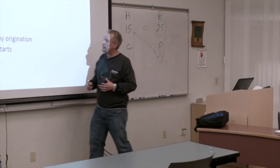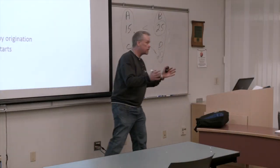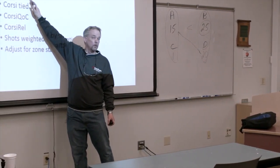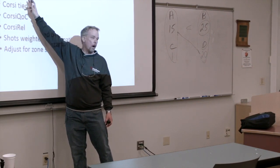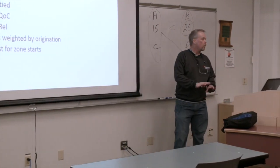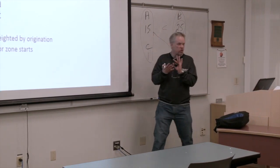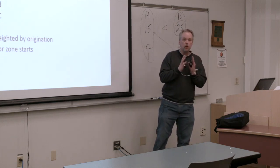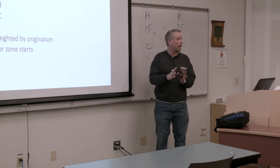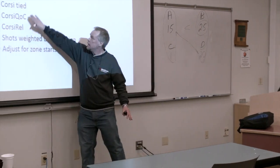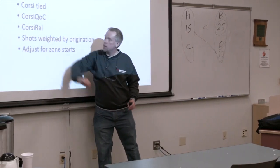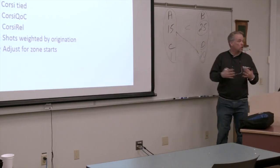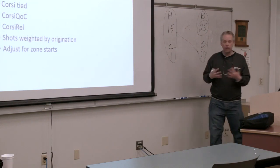So we've got Corsi close, Corsi tie, something called Corsi QOC, Corsi rel, shots weighted by origination, adjusted for zone starts. So we're kind of trying to take that Corsi and adjust it for a lot of its flaws. Corsi close, as you can kind of guess, is we look at that Corsi statistics for and against, but we only look at when the game is plus or minus a goal. Corsi tied, same idea as Corsi close, it's just that now the game's tied. Now what's your Corsi for, what's your Corsi against? Because the game is on the line. How do you perform when things are really tight?